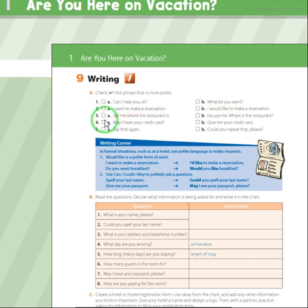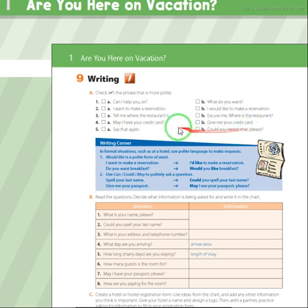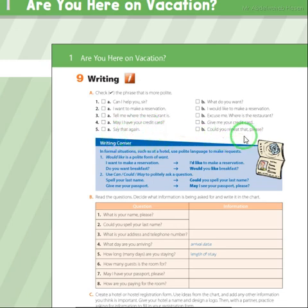Number 3: 'Tell me where the restaurant is' versus 'Excuse me, where is the restaurant?' — B is more polite. Number 4: 'May I have your credit card' versus 'Give me your credit card' — A is more polite. Number 5: 'Say that again' versus 'Could you repeat that again?' — B is more polite.